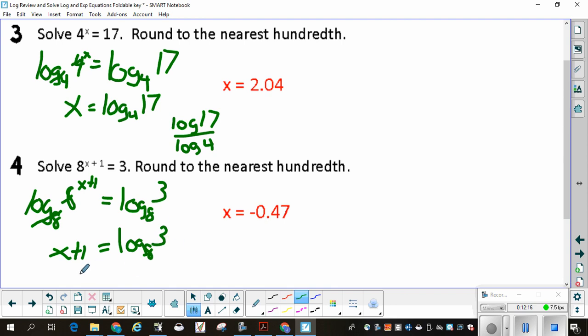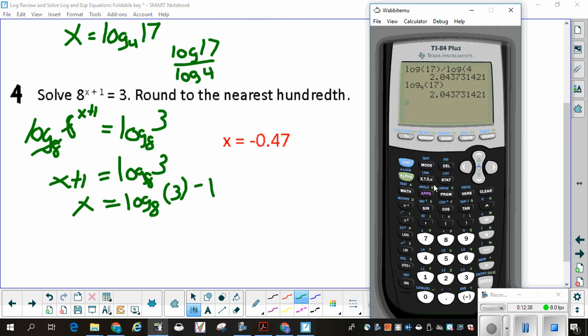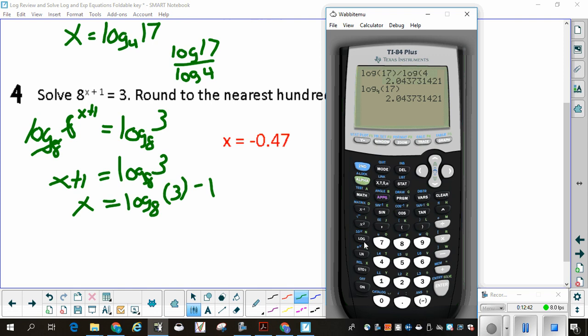Now I have x plus 1 equals log base 8 of 3. Before you find that, realize you're just going to subtract 1. So if I write it out like this with my parentheses so I remember, what I want to do is take the log base 8 of 3, get that answer, and then subtract 1. I will do log of 3 divided by log of 8, get that answer first. Now I'm going to subtract 1. I can do second answer that pulls this answer back and subtract 1 and I get negative 0.47.